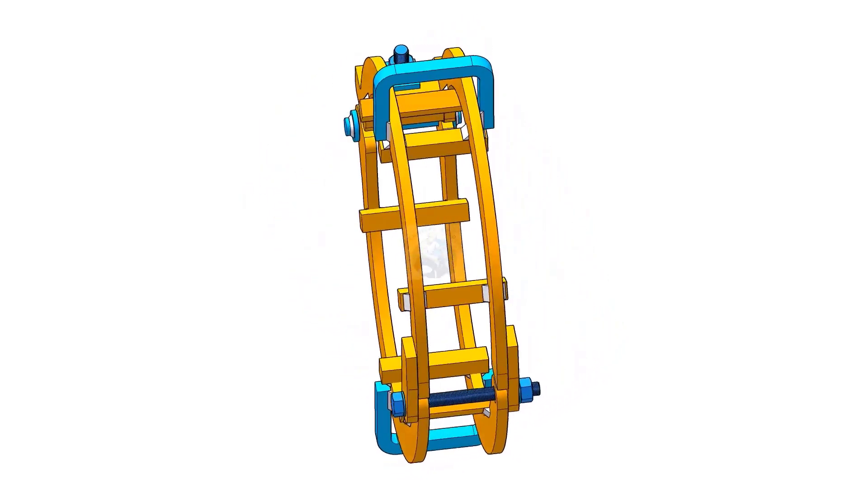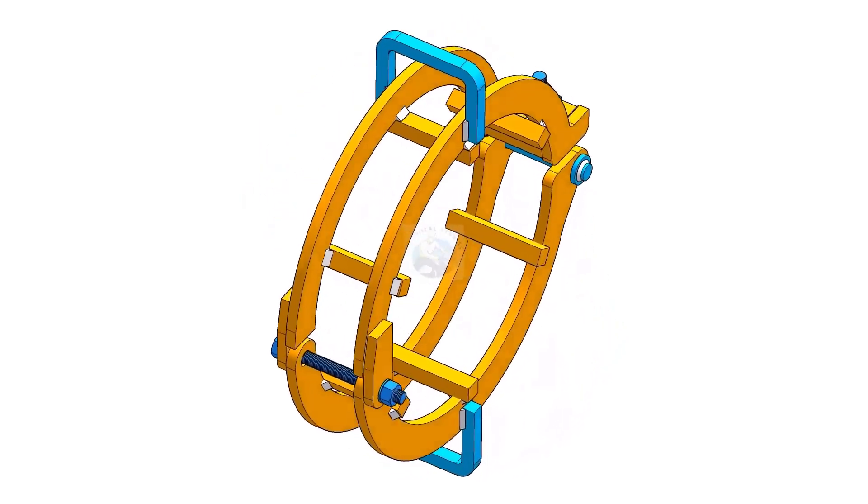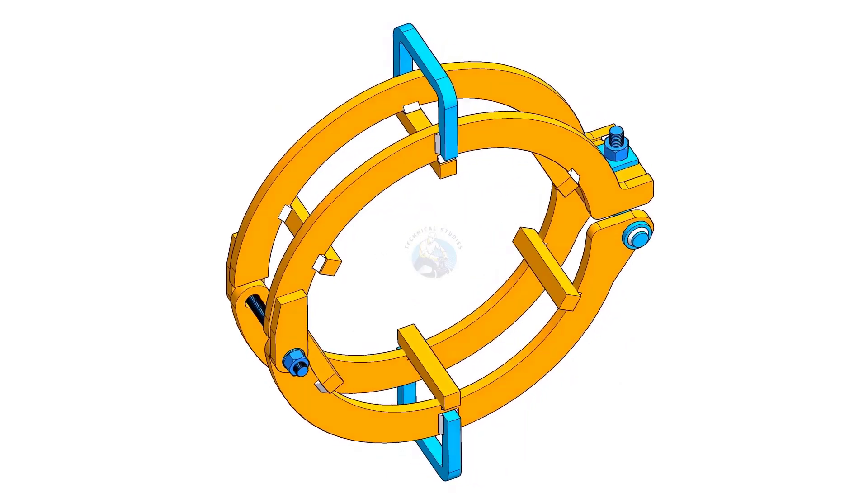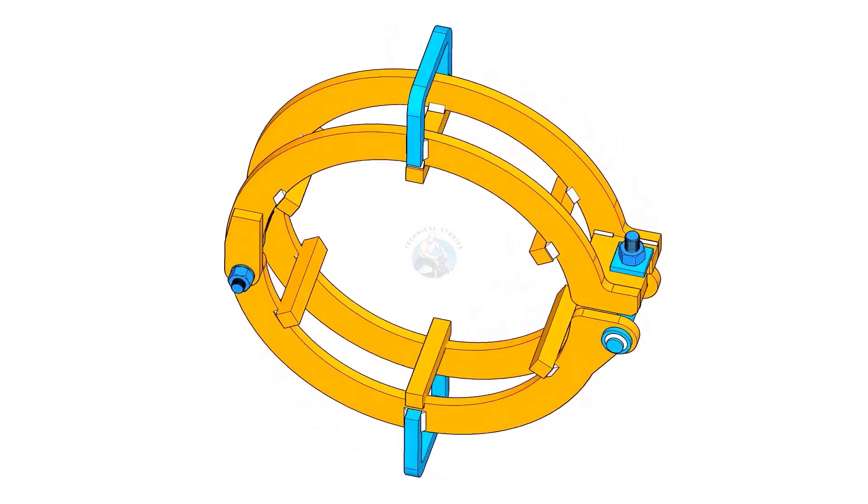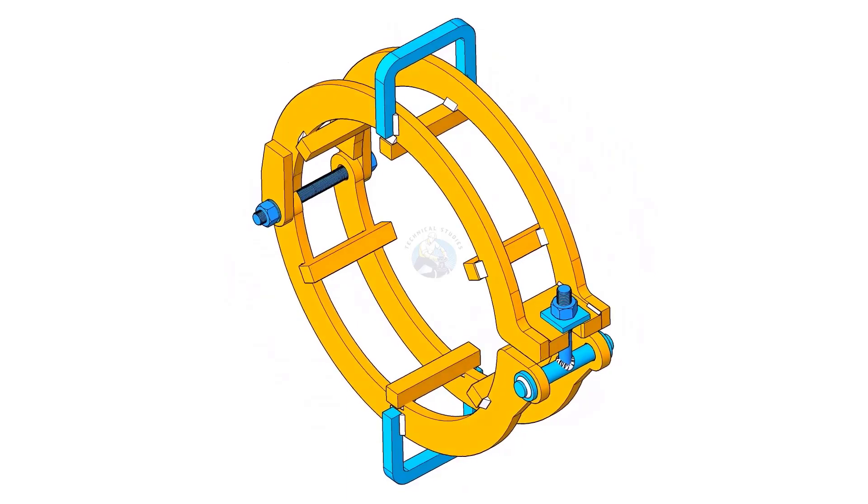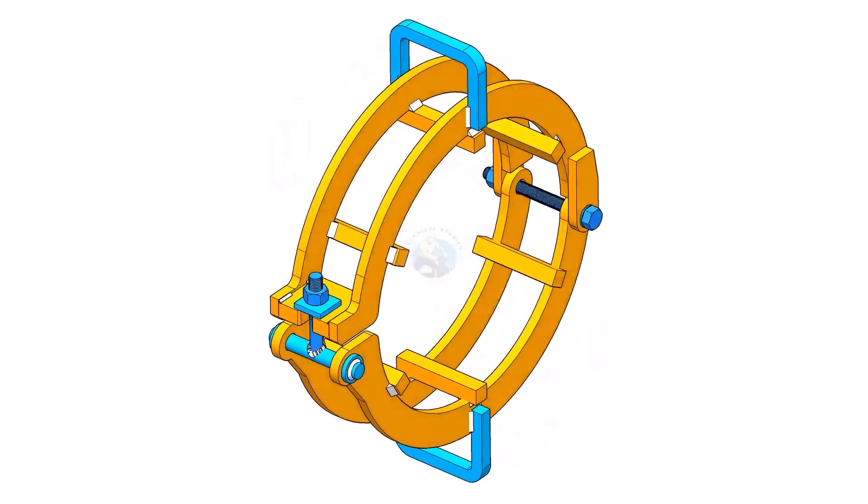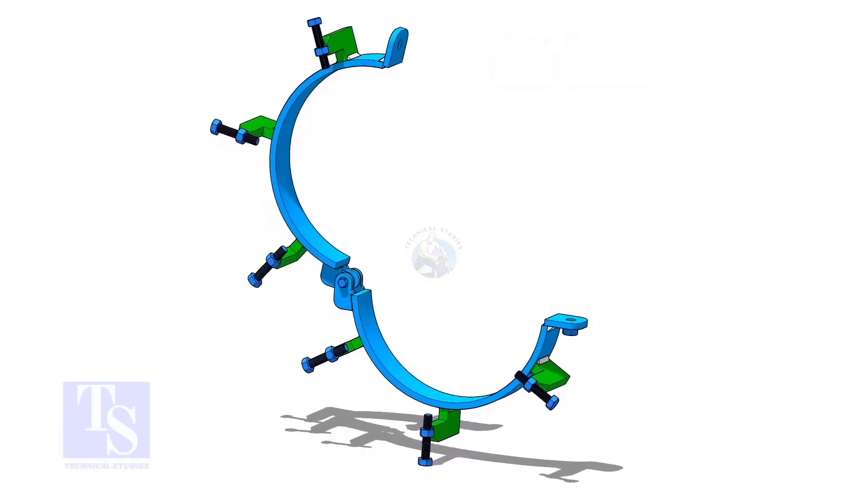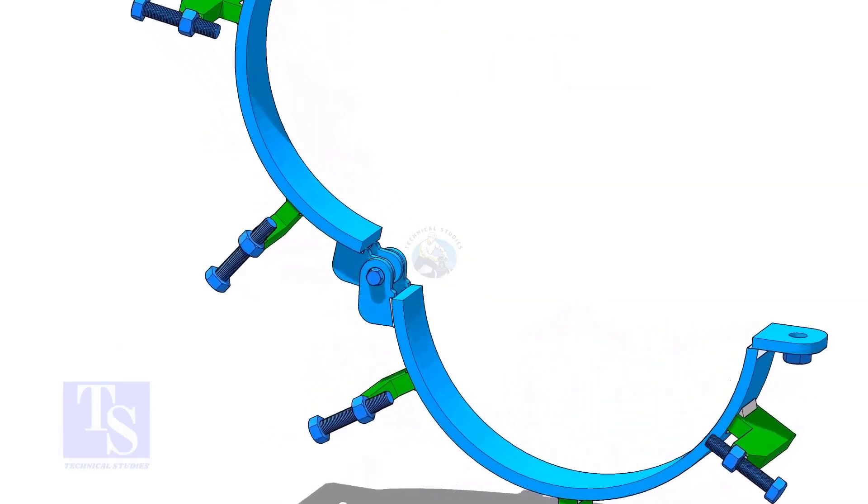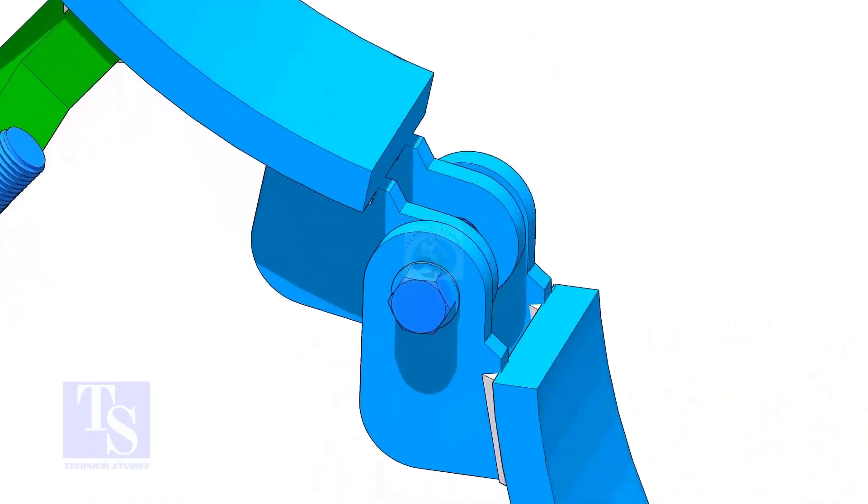Welcome to Technical Studies. In this video, we will learn how to make a low-cost, simple, and efficient pipe fit-up and alignment clamp. Most of the materials we are going to use are available from scrap. This process is common for any size of clamps. In this demonstration, we will make a clamp suitable for 16-inch pipe fittings.